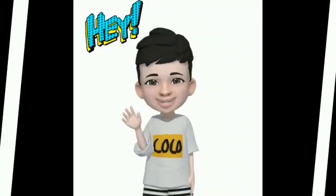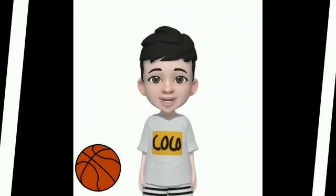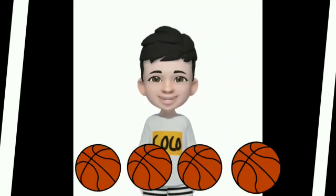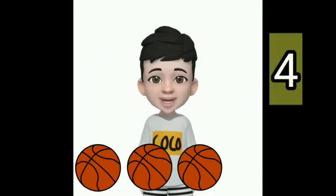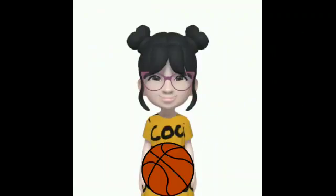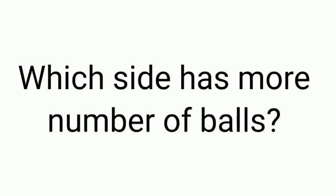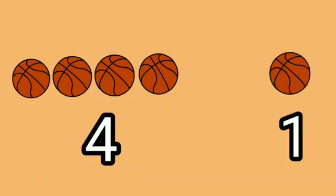This is Coco. Coco has four balls. This is Cookie. Cookie has one ball. Which side has more number of balls? There are four balls on the left side and one ball on the right side. Four is greater than one.